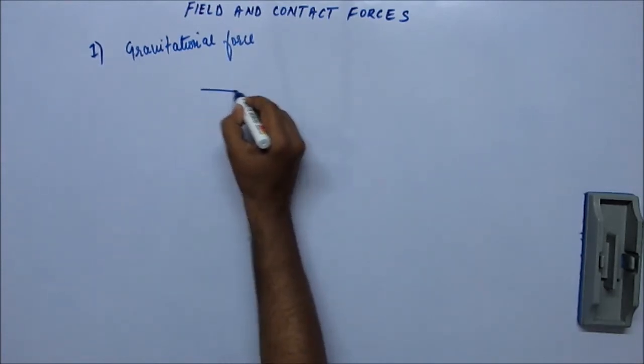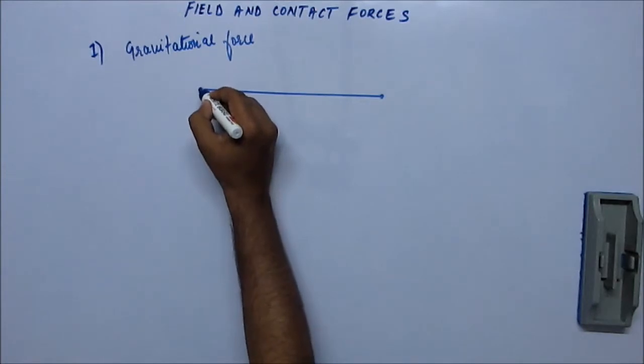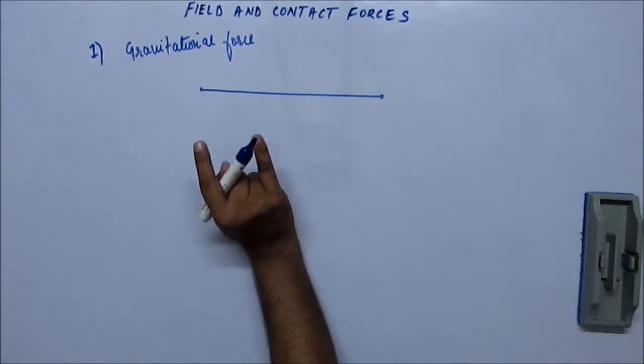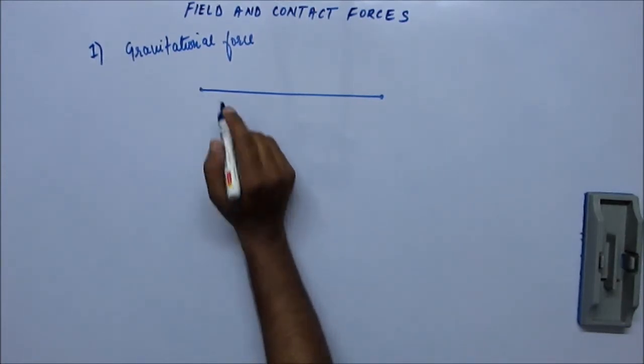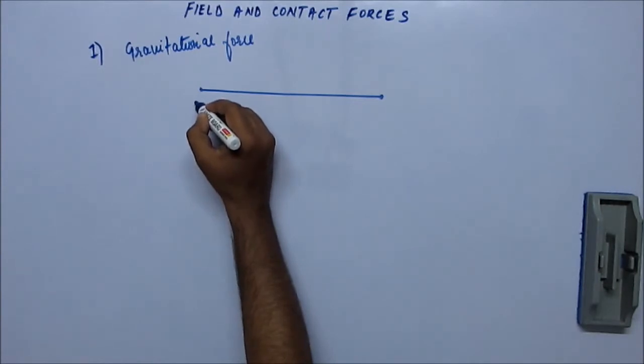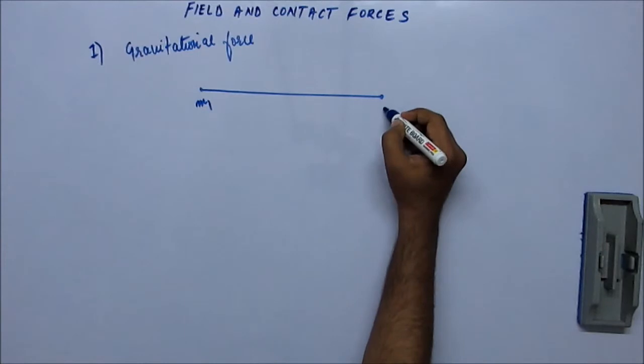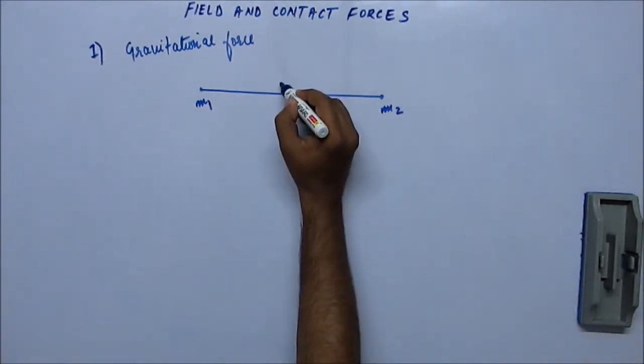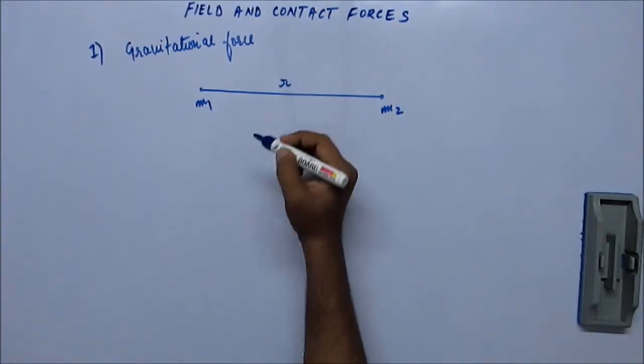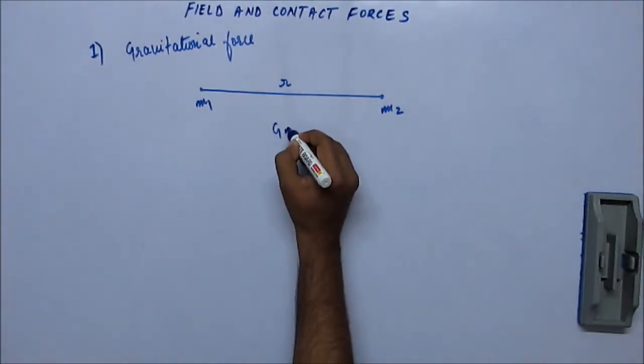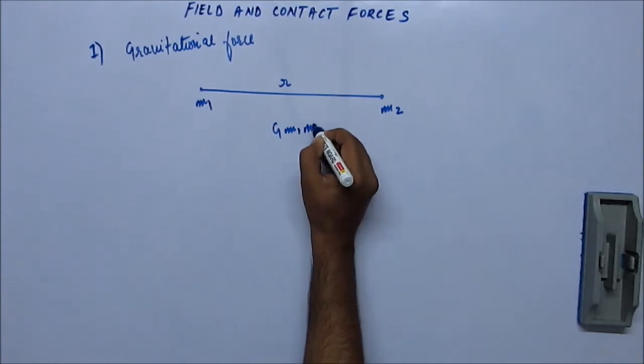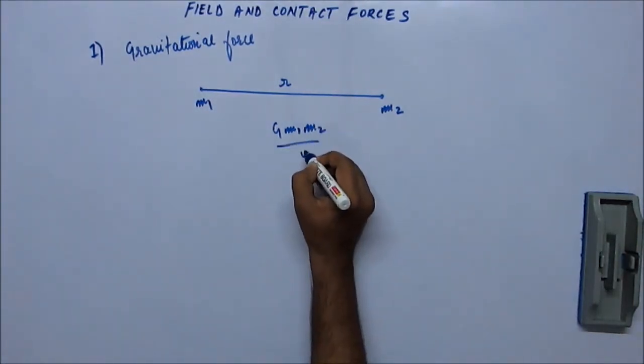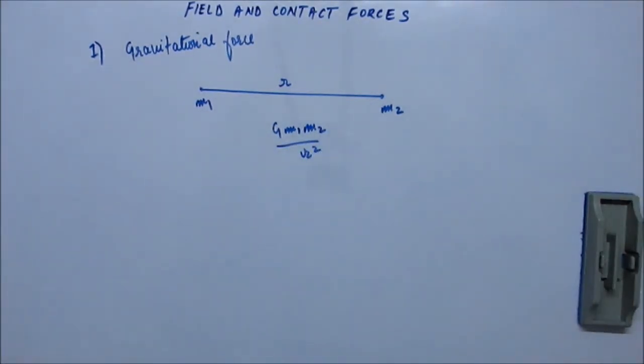Gravitational force is a force of interaction between two particles by virtue of their mass. If a particle or extended body has mass M1 and another has mass M2, and the distance between the centers of their bodies is R, then the gravitational force is G M1 M2 upon R square, where G is the gravitational constant.